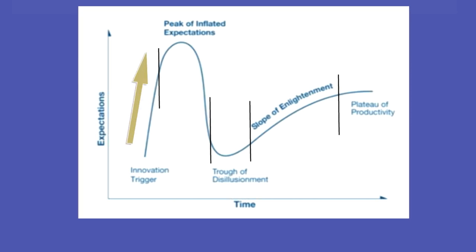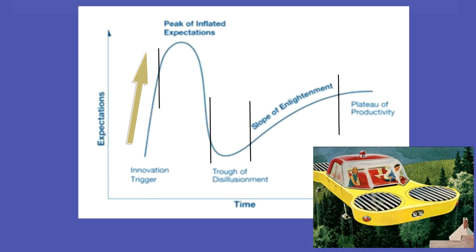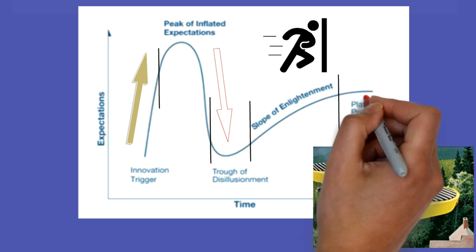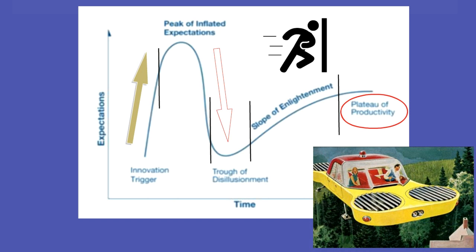Whenever a new technology clears proof of concept, a lot of hype is created, taking it to a peak of inflated expectation — think, for example, about the idea of flying cars originally floated in the 1950s. Once that phase is over and the technology does not materialize, expectations take a nosedive, mainly because of negative press. It's crucial at this point to stay committed. Perseverance leads to second-generation products created with the aid of more matured core and peripheral technologies, leading to gradual success called the slope of enlightenment, and eventually to the plateau of productivity.